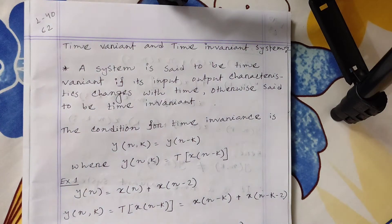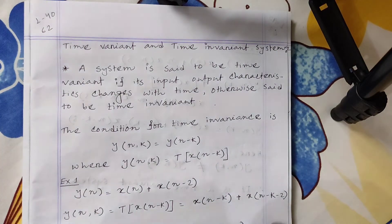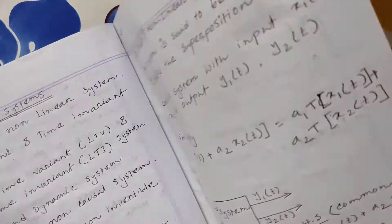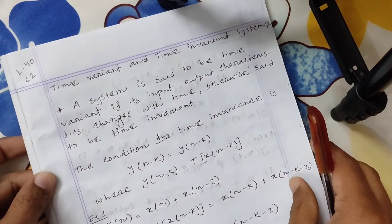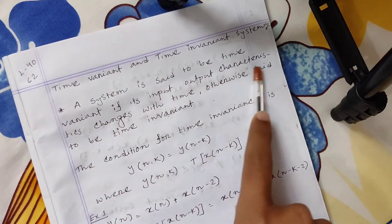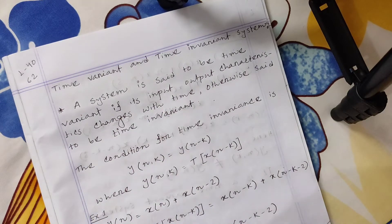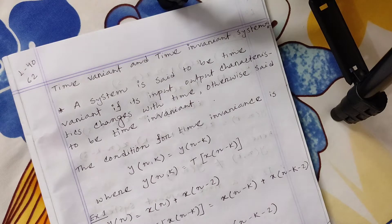We will talk about time-variant and time-invariant systems. We will also talk about linear and non-linear systems. A system is said to be time-variant if its input-output characteristics change with time.